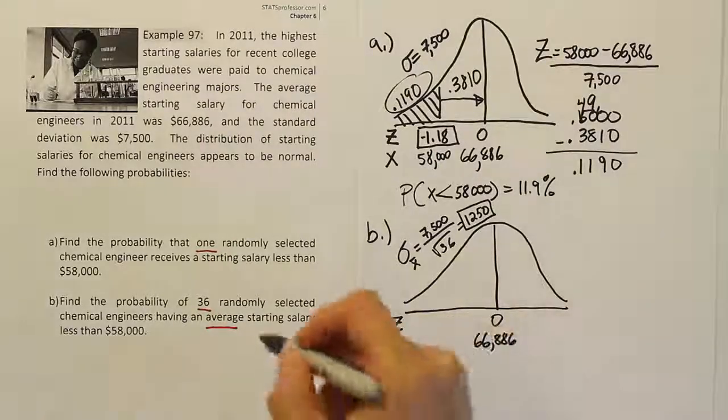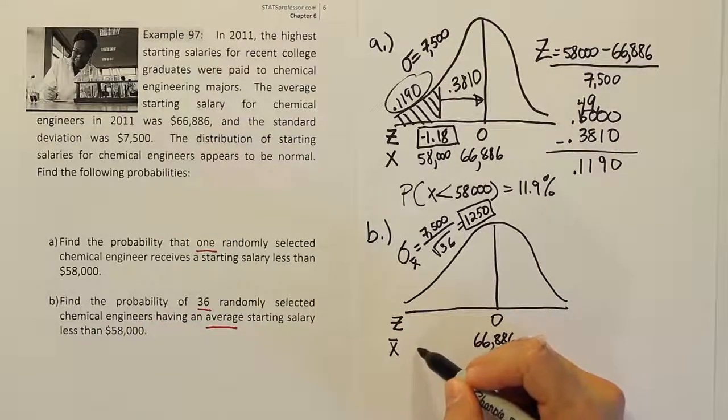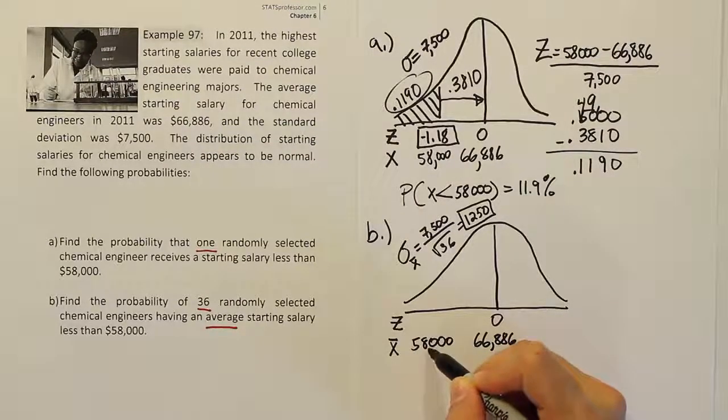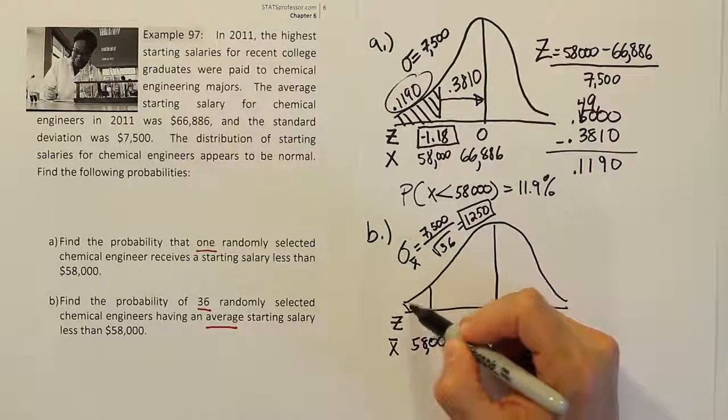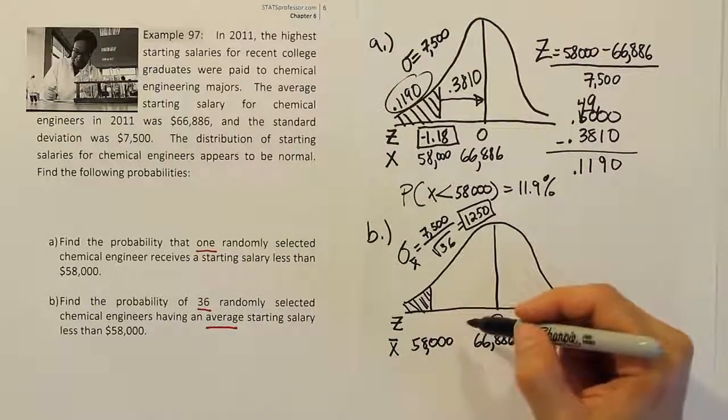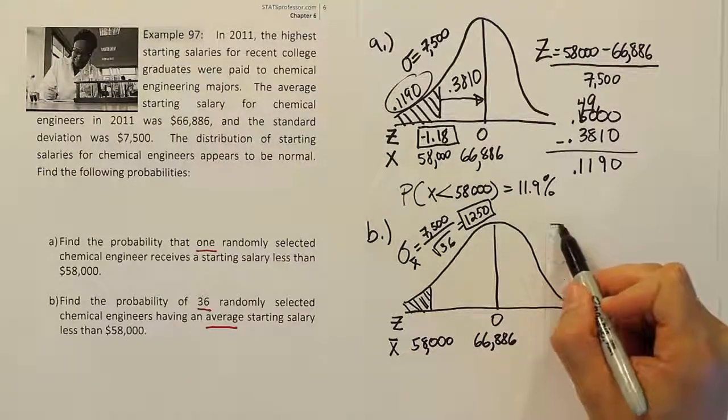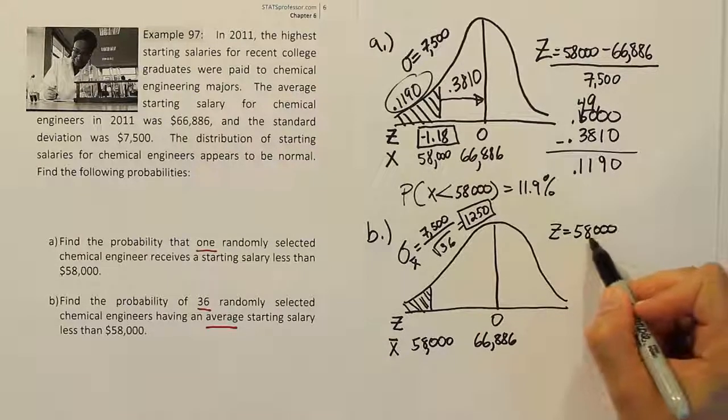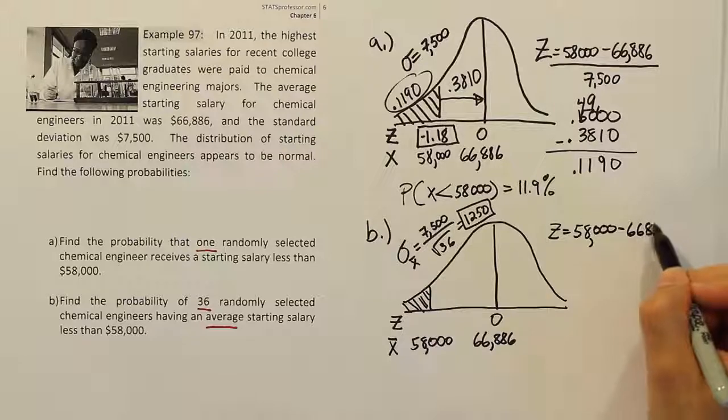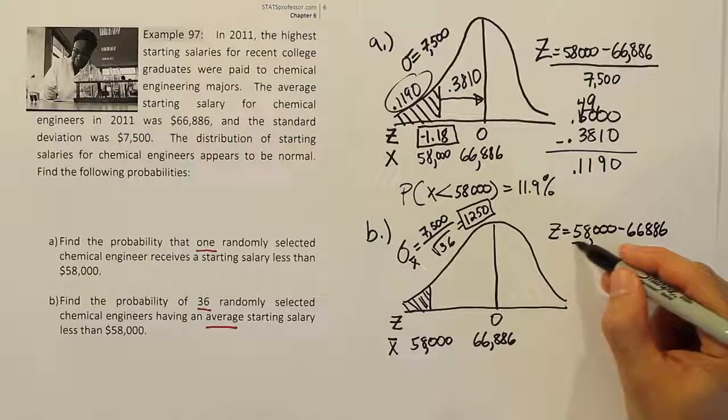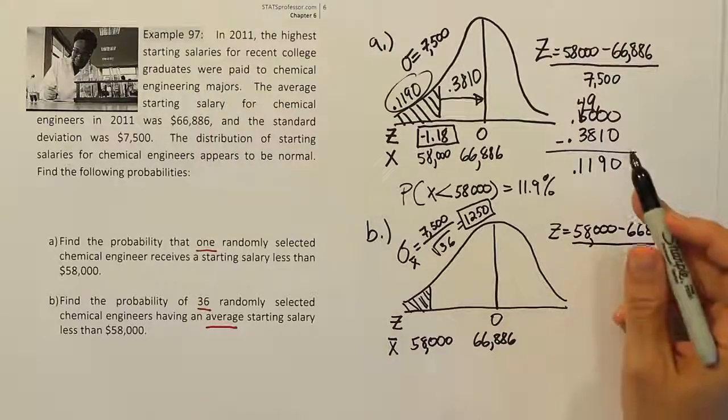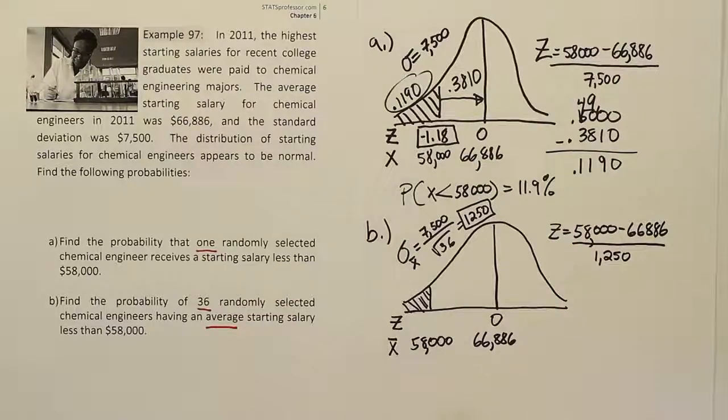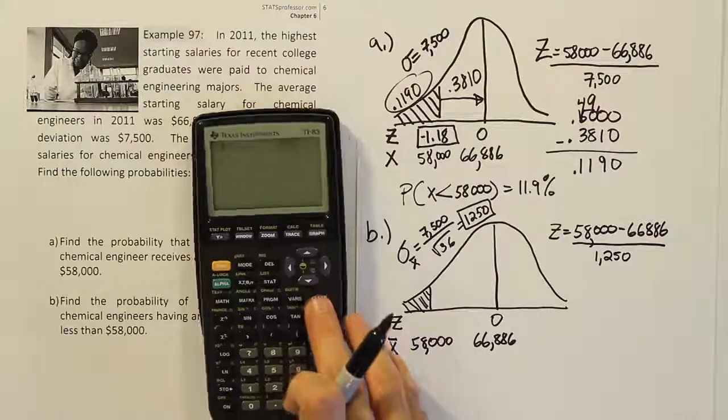Now we're still looking for the probability that it's less than 58,000. Now we're just looking for the probability that the mean is less than 58,000. So the sample mean is what we're interested in here. In order to figure that out, we're going to have to use the z-score calculation. So we'll end up having the same 58,000 minus the same mean as before. So the top remains unchanged. But the denominator, instead of being 7,500, it's only 1,250. This is going to make the z-score much larger than it was before.